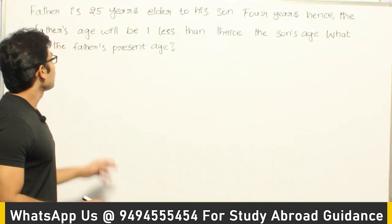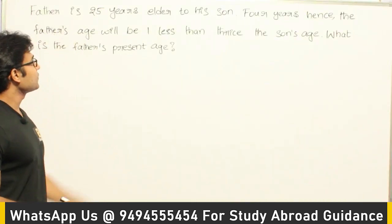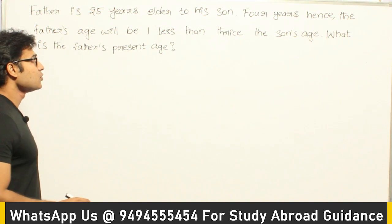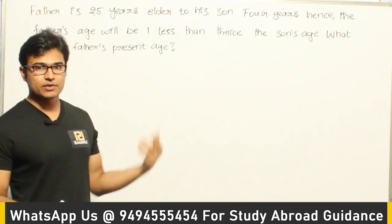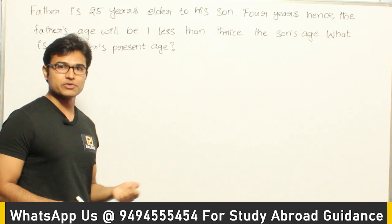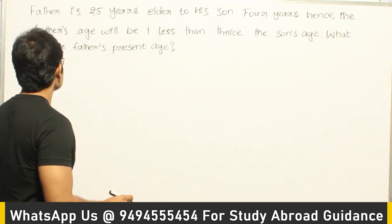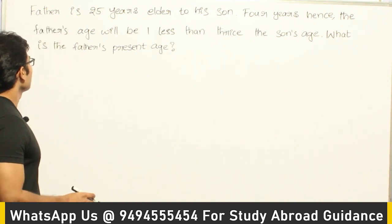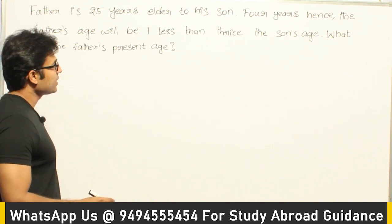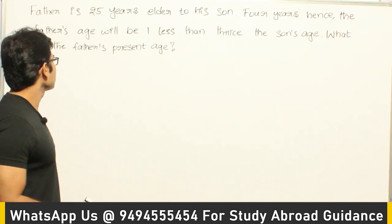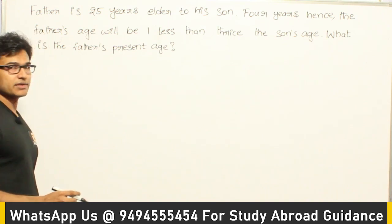Let's solve this example. Father is 25 years elder to his son. 4 years hence — 'hence' means later, so 4 years hence means 4 years later — the father's age will be one less than thrice his son's age. Now what is the father's present age?